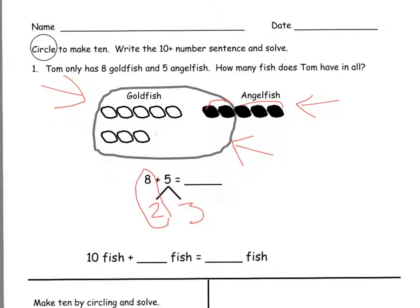So our new number sentence would say 10 fish plus 3 fish equals 13 fish. 8 plus 3 will also equal 13.